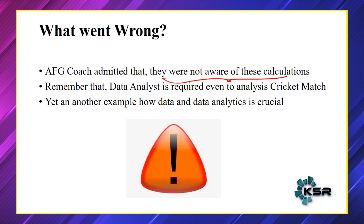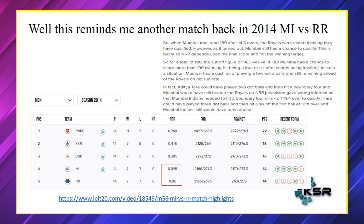This reminded me of another match in IPL. Back in 2014 there was a match between Mumbai Indians and Rajasthan Royals — a last league match where one of these two teams had to qualify for the playoffs. Rajasthan had scored 188, so Mumbai Indians needed to score 189, but this was cut short to a specific number of overs. They had to score within 14.3 overs to get past Rajasthan's run rate.